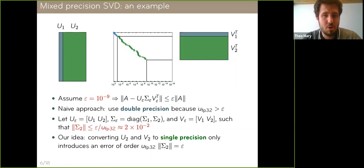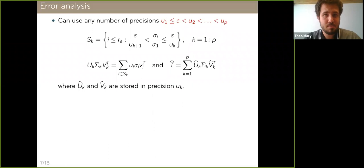Now, what we're proposing is to convert the second group to single precision. And we claim that this is going to be satisfying. Of course, we're going to introduce an error that is proportional to the unit roundoff of single precision with this conversion. But it's also going to be proportional to the norm of sigma 2. And so by construction, we're going to end up with an error of order epsilon. So this is the basic intuitive idea. It's easy to formalize. And we can also generalize it to any number of precisions, not just two. So U1, U2, up to Up. And we can assume epsilon without loss of generality to be between U1 and U2, so that the naive approach is store everything in precision U1.